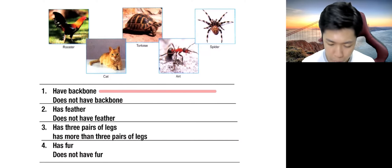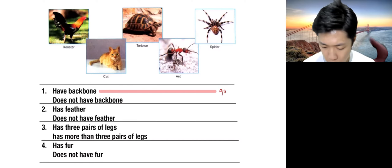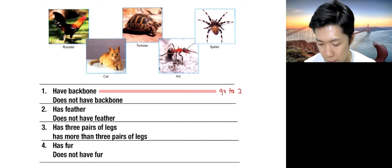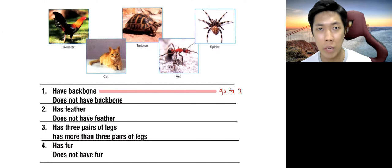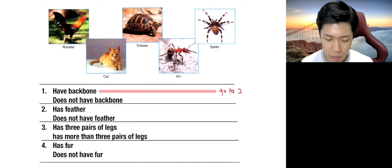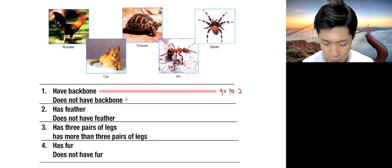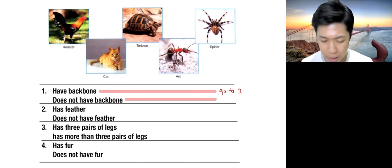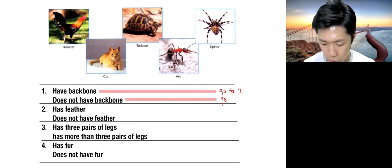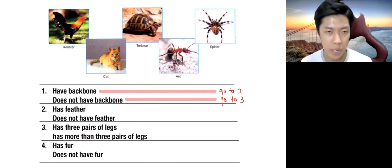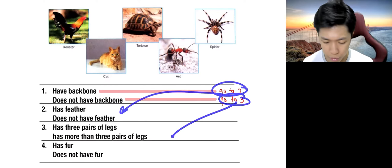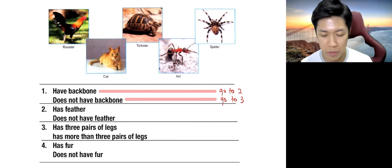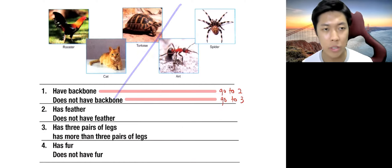And we will write as go to two because we will have to continue to ask questions like that to split them. And finally, we will get to have the name of the animal written down. So does not have backbone, we have ant and spider. So we will have that go to three. Which that brings you down to two and that brings down to three. So now we have successfully split this five animals into half.